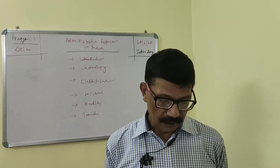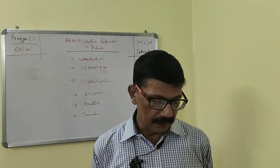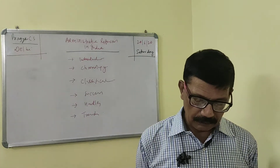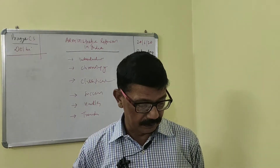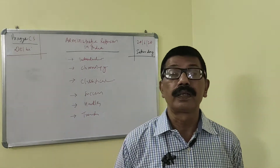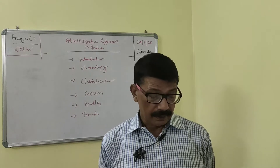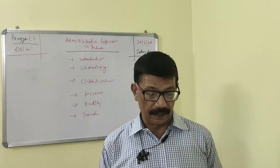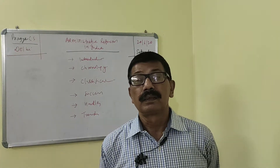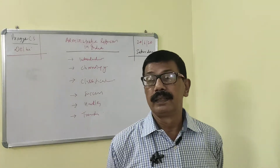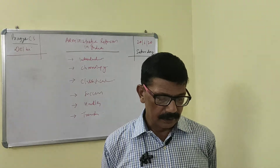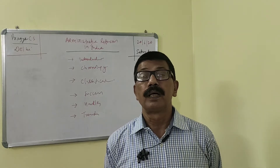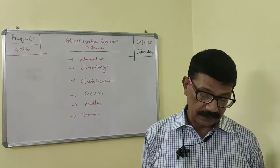In 1959, the Second Pay Commission was constituted under the chairmanship of Jaganath Das. In 1962, V.T. Krishnamachari Committee was constituted on training and recruitment of civil services. In 1964, under the chairmanship of K. Santhanam, the Committee on Prevention of Corruption was established, giving recommendations to constitute the Central Vigilance Commission. In 1964 also, the Department of Administrative Reform was created in the Ministry of Home Affairs — a very important development.